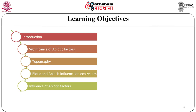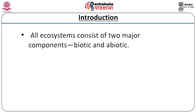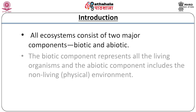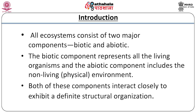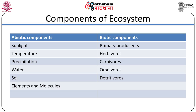All ecosystems consist of two major components: the biotic and abiotic. The biotic component represents all the living organisms and the abiotic component includes the non-living, that is the physical environment. Both of these components interact closely to exhibit a definite structural organization, and in any ecosystem both components are interdependent on each other for various kinds of changes.